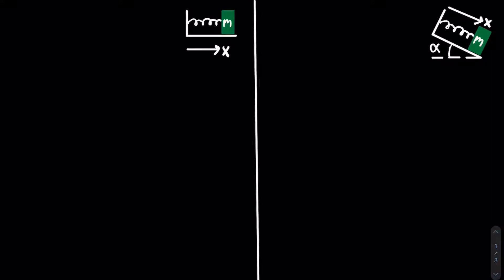Now we can start making our Lagrangian. The first thing we need is the kinetic energy. The kinetic energy of the mass-spring system on the left is equal to one-half m x-dot squared, which is the velocity squared. That is also the kinetic energy of the mass-spring system on the right.